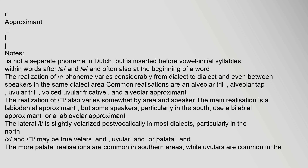The realization of the R phoneme varies considerably from dialect to dialect and even between speakers in the same dialect area. Common realizations are an alveolar trill, alveolar tap, uvular trill, voiced uvular fricative, and alveolar approximant. The realization of V also varies: the main realization is a labiodental approximant, but some speakers, particularly in the south, use a bilabial or labiovelar approximant. The lateral L is slightly velarized post-vocalically in most dialects, particularly in the north. The velar fricatives X and G may be true velars, uvular, or palatal; more palatal realizations are common in southern areas, while uvulars are common in the north.